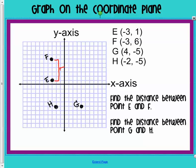5 units away. Does that make sense? So, you're counting the distance between E and F. So, the distance between these two is 5.